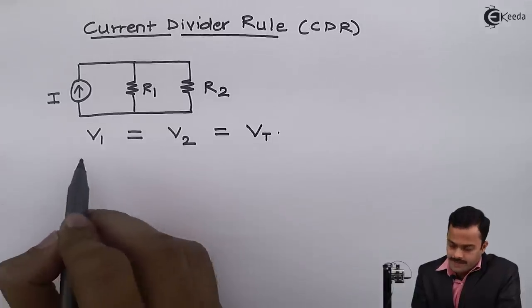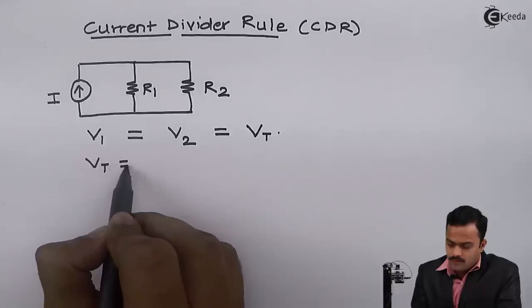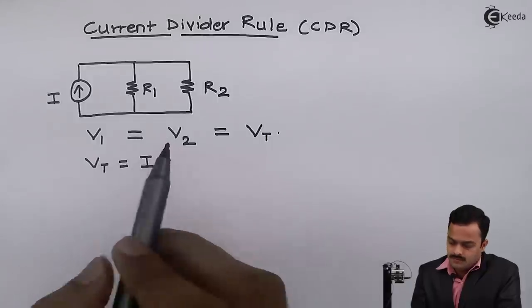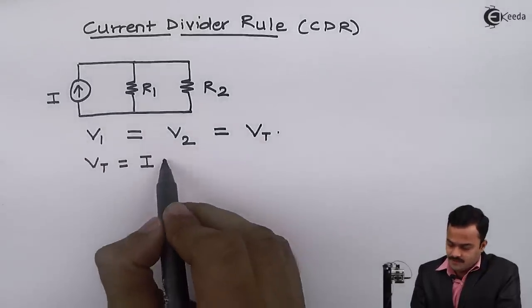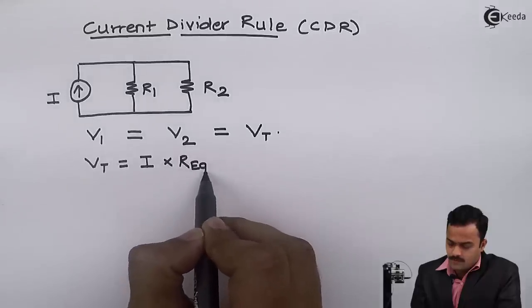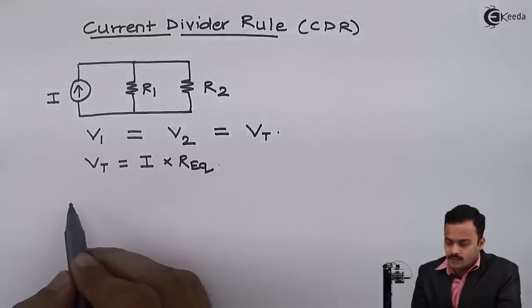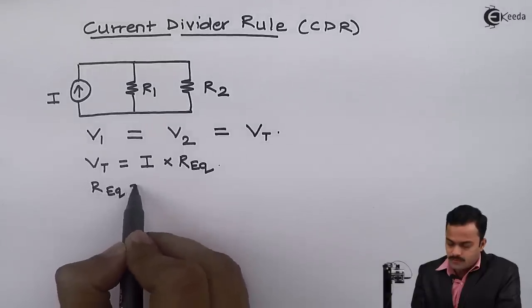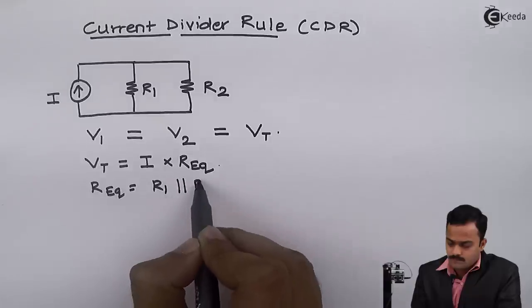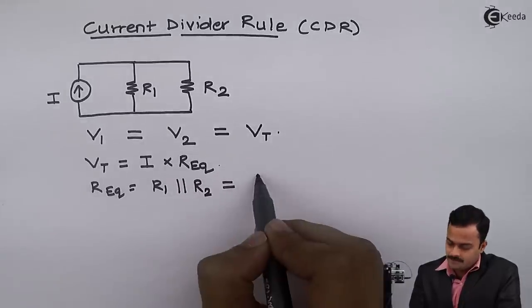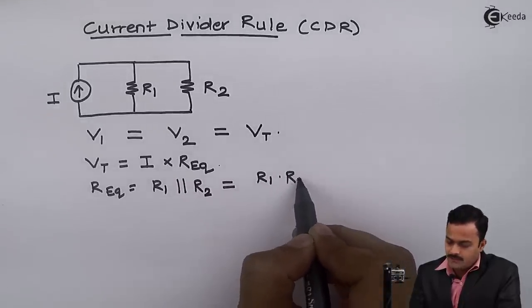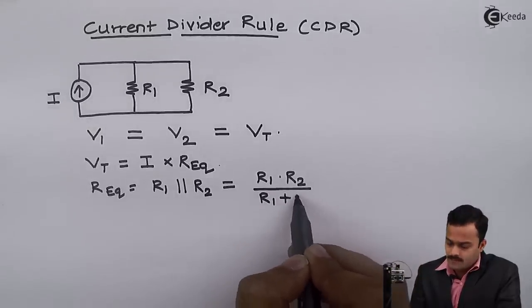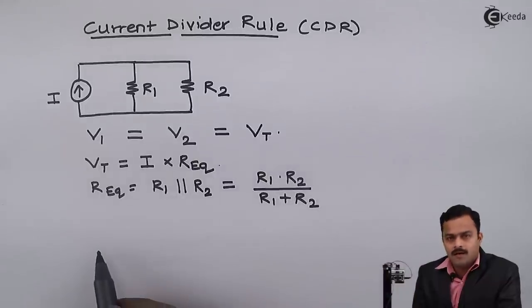Now I can say total voltage will be total current, which is supplied by this current source, multiplied by equivalent resistance given by parallel combination of R1 and R2. So I can say multiplication of R1 and R2 divided by addition of R1 and R2.